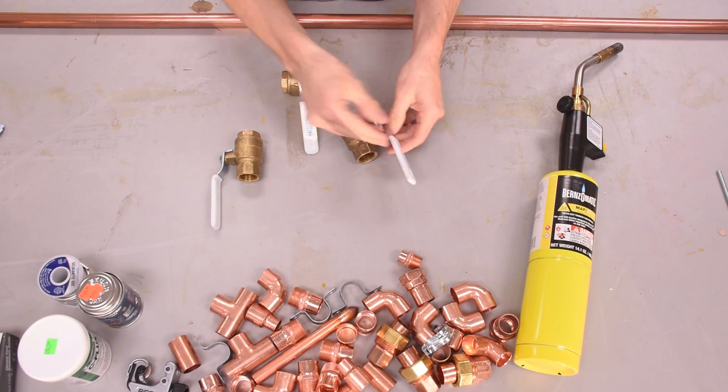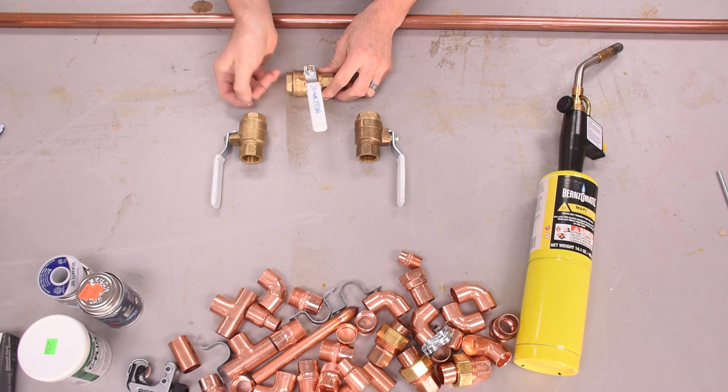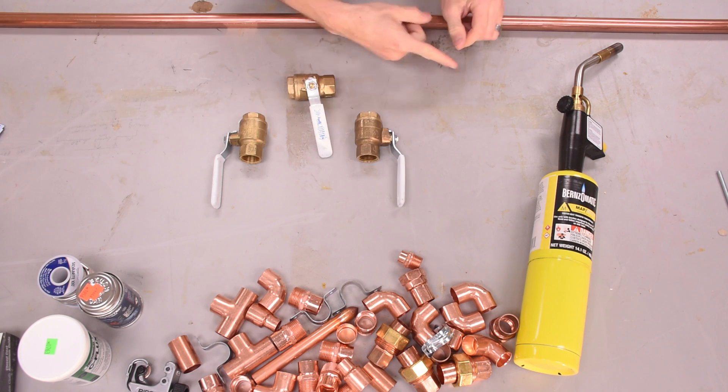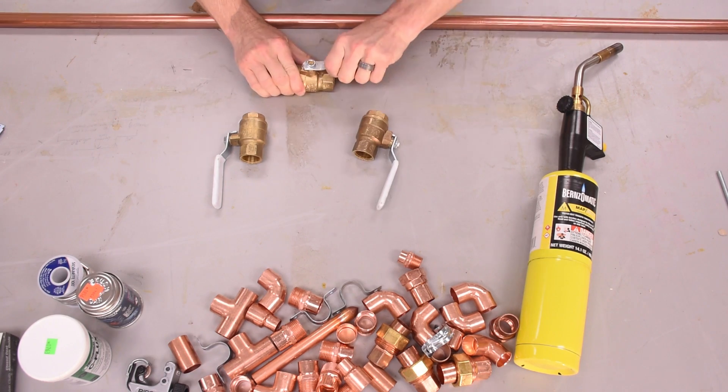You'll also need a torch. I'm making an isolation manifold for a refrigerated air dryer that I need to install. I'll have my valve set up like this so that I can isolate the air dryer from the system if I need to do maintenance on it.